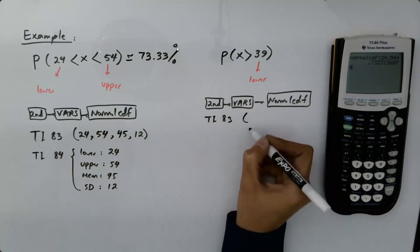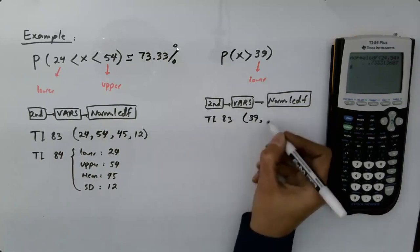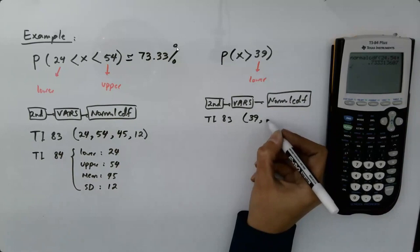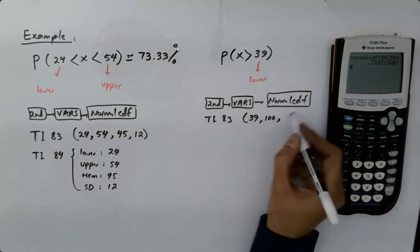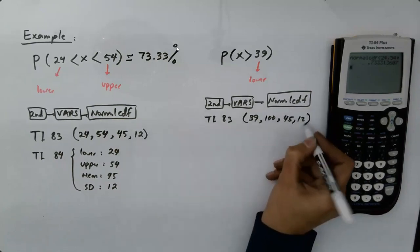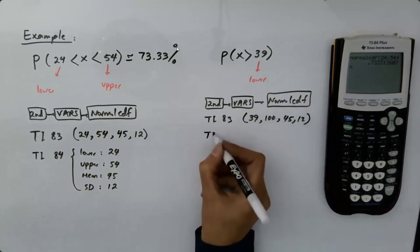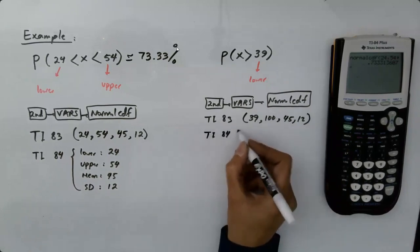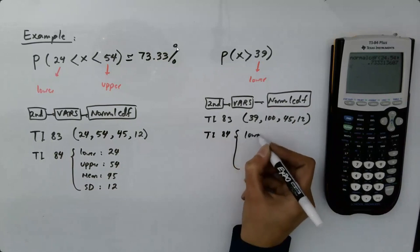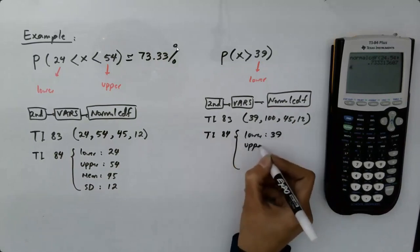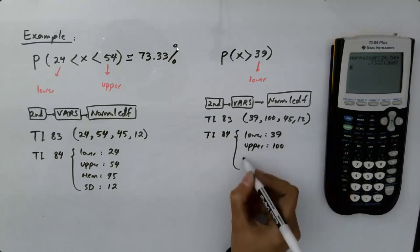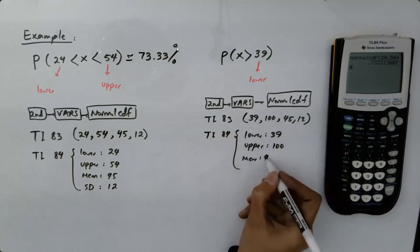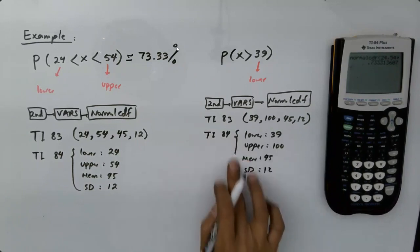If you're using TI-83, just use your lower limit which is 39. Upper limit, use a large positive number like 100, like 1000, mean is 45 minutes and standard deviation is 12 minutes. If you're using TI-84 or your emulator, the lower limit is 39, the upper limit is a large positive number like 100 or 1000.